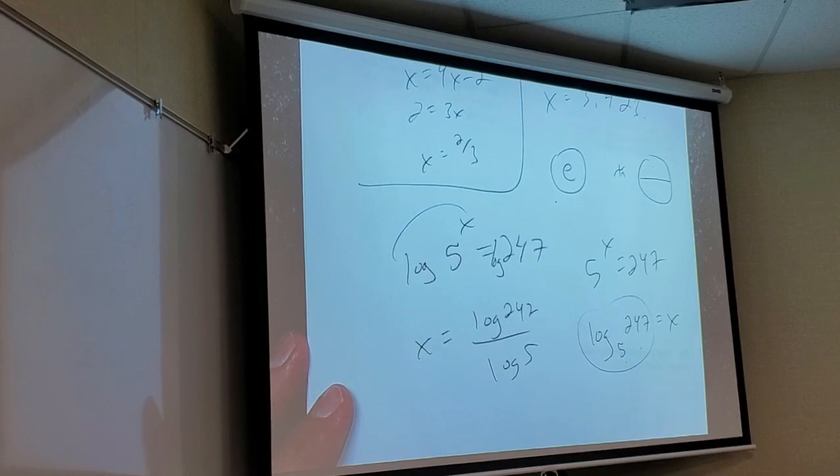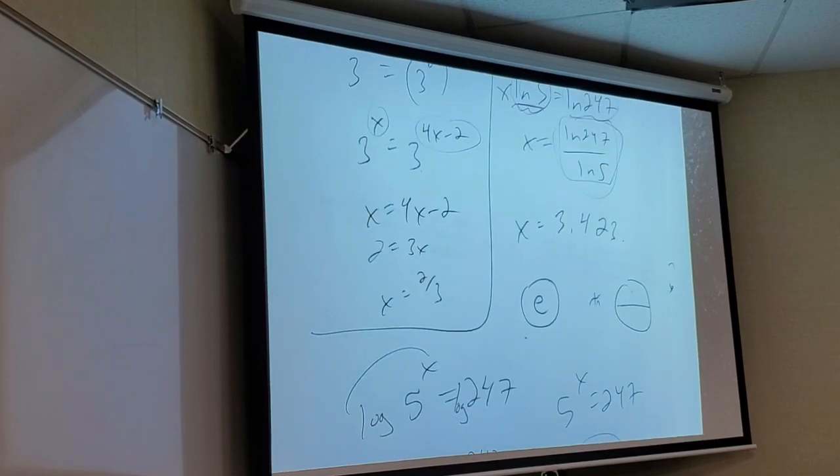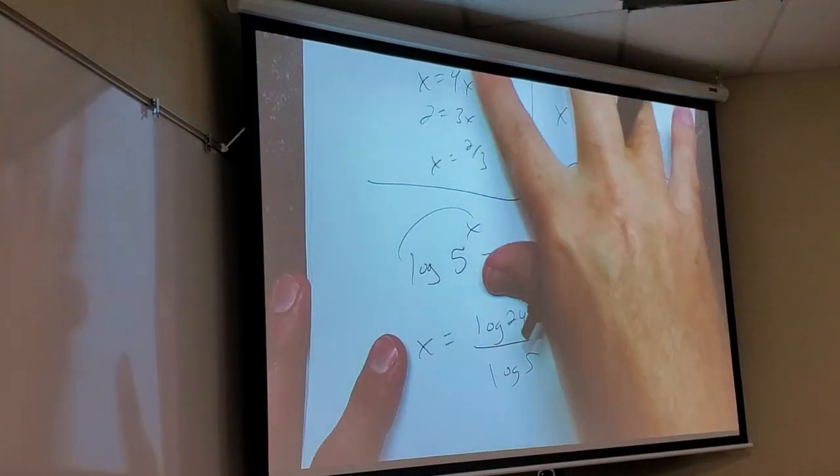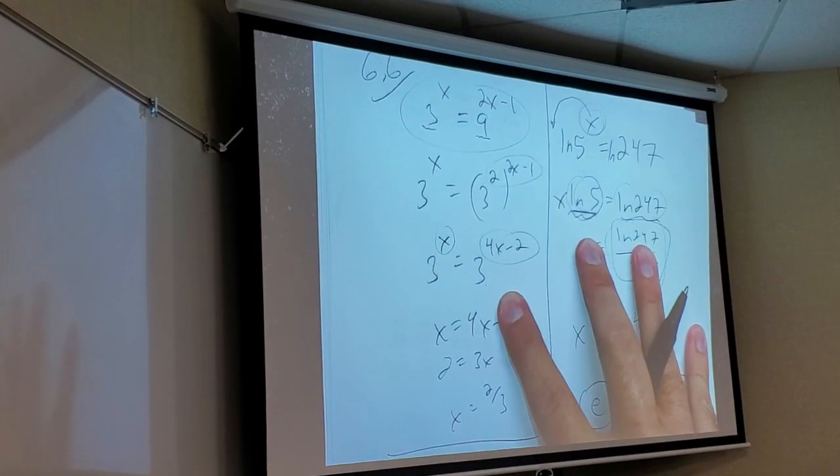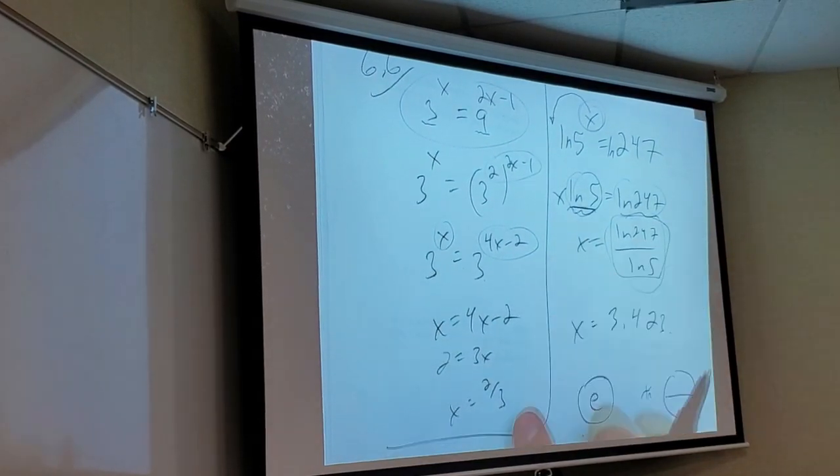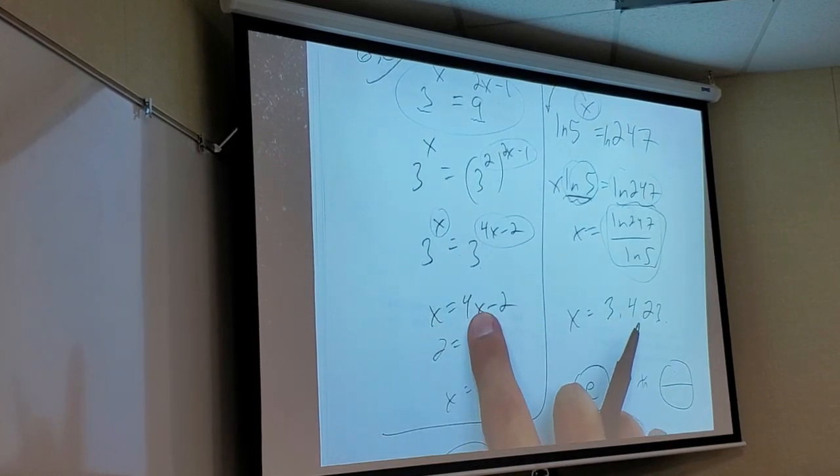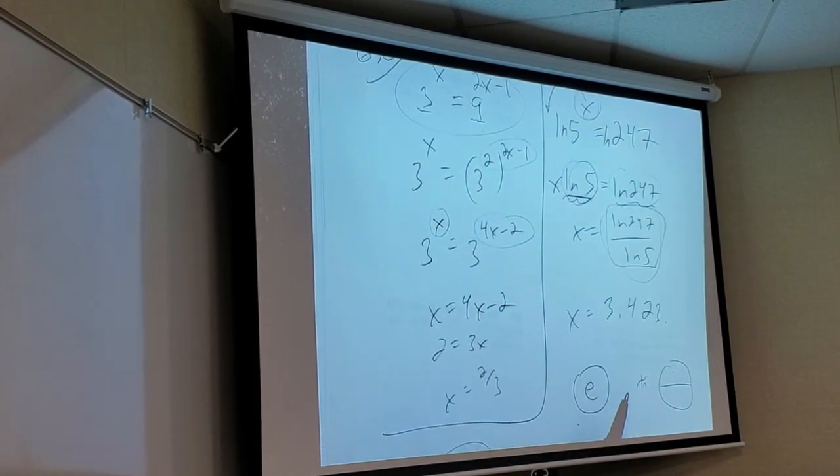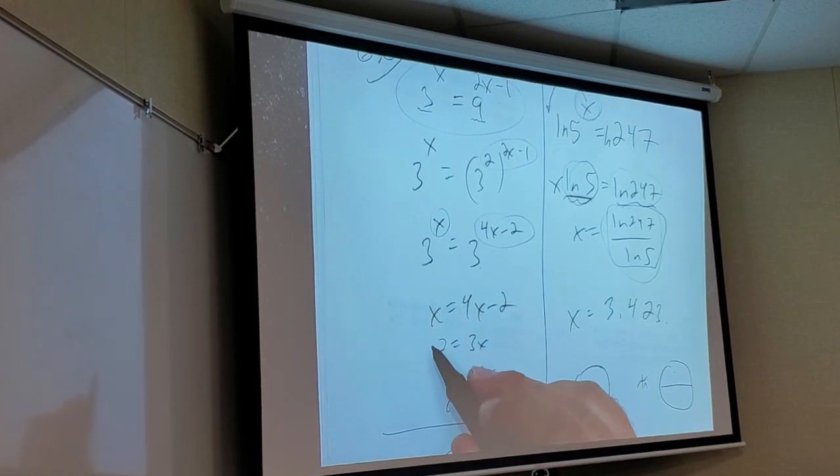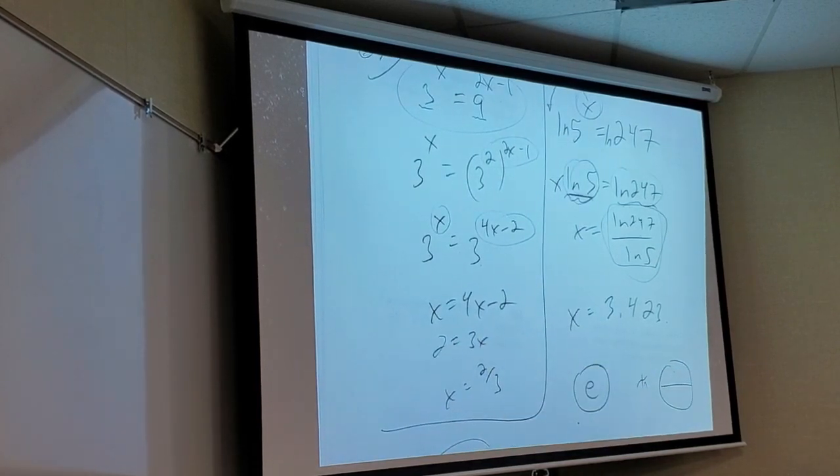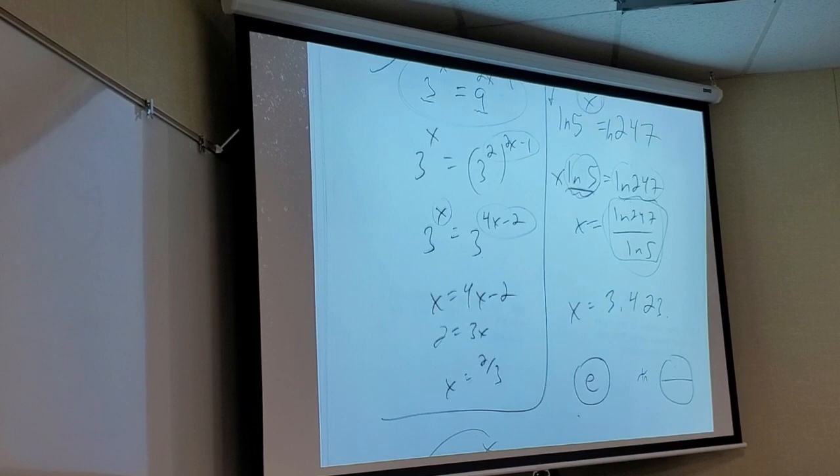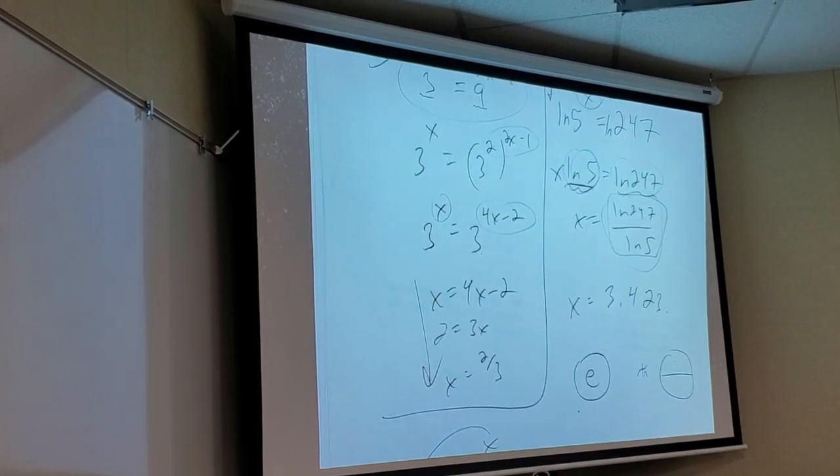For the first one, how did you get 3x? Subtract x, add 2. Or you could subtract 4x and divide by negative 3, and the negatives would cancel either way. I'd do that part real quick because I know you all could do that.